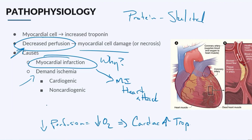There are lots of reasons why demand ischemia happens. Some are cardiogenic in nature, meaning they start from the heart, and there are also cases where they aren't heart related. But the big takeaway here is that if your heart is not getting oxygen, the heart tissue is going to be damaged or it will die, and then you're going to have this increase in the release of troponin into the bloodstream.